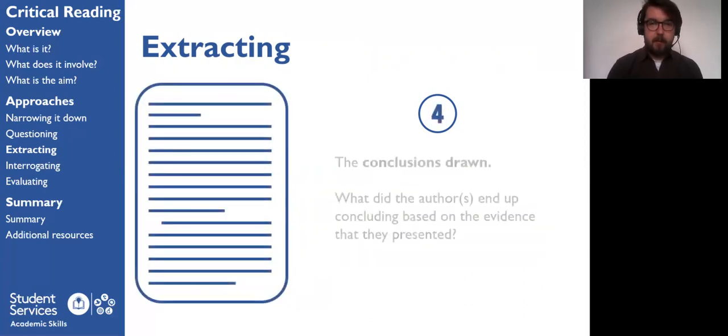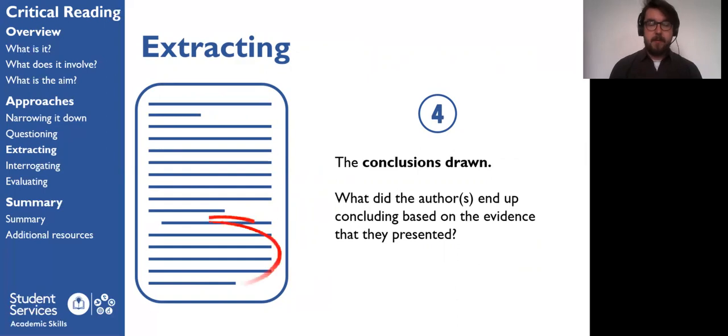The fourth thing that we want to keep an eye out for is the conclusions that were drawn. What did the authors end up concluding based on the evidence that they presented? This will obviously come towards the end of the paper, and it can sometimes span several paragraphs. Sometimes conclusions can be quite complex because there can be competing explanations for things. But do try and keep an eye out for what the conclusions of the paper actually are.